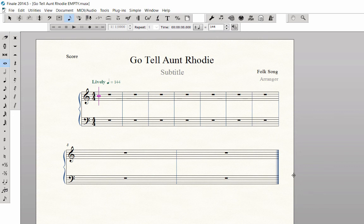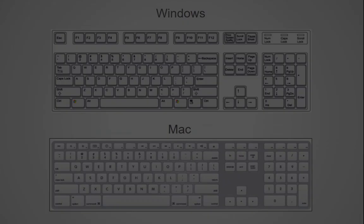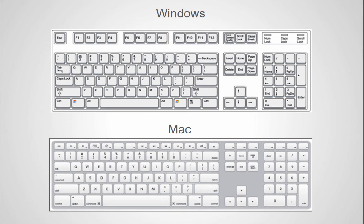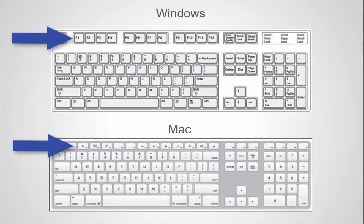Your laptop shortcut table is now in place. It will always be turned on every time you open Finale. Now you can use the number row on your computer to change note durations, and the function key row to add intervals.